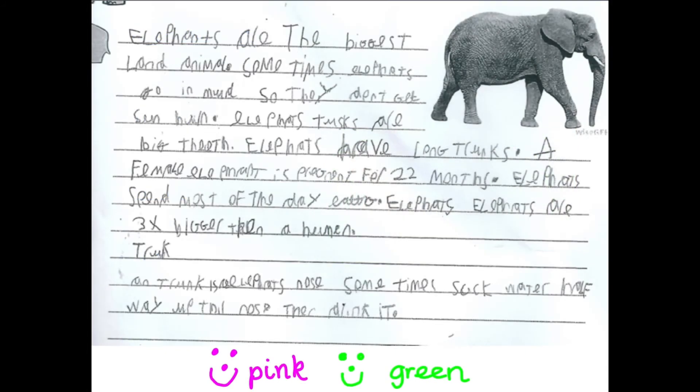This is an example of someone's report about elephants. I've written pink and green at the bottom with smiley faces. At school we use pink to show all the really good things, and we use green - not to show bad things - but to show things you need to work on. Green is for growth, for learning, and that's why they both have a smiley face. We're going to start with the pink - what is really good about it - and then what things we could mark in green.